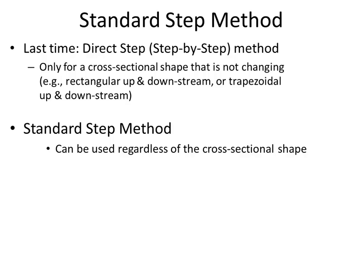The standard step method we're learning today can be used regardless of the cross-sectional shape, but it's iterative. We'll set up a spreadsheet where each row represents a single step between sections — meaning we'll need multiple rows just to go one step — whereas in the direct step method, each row was a complete solution for one step.